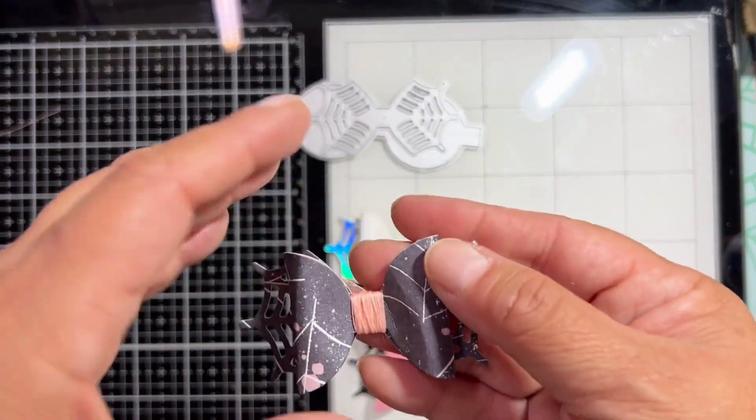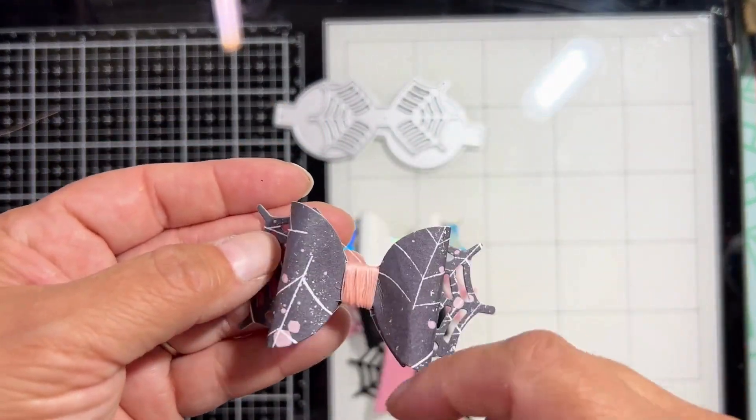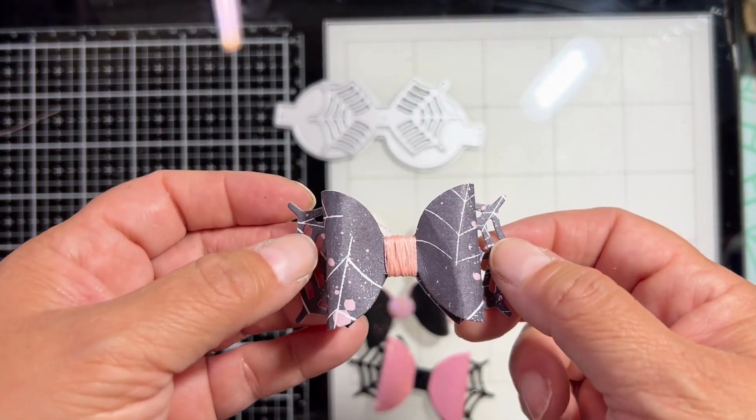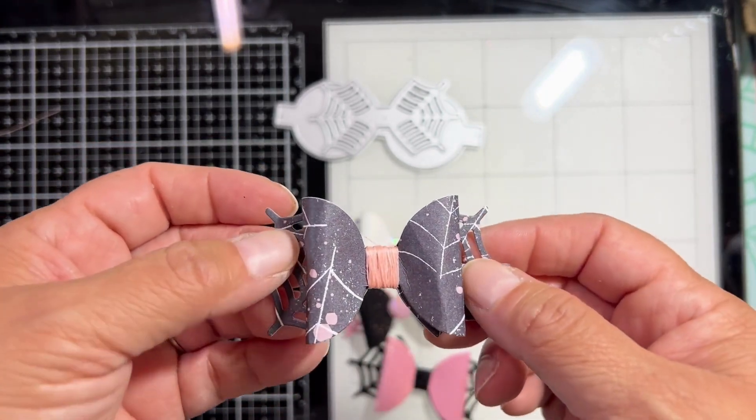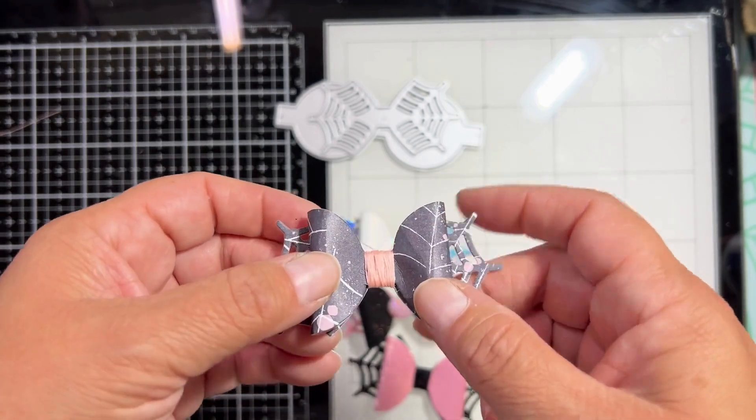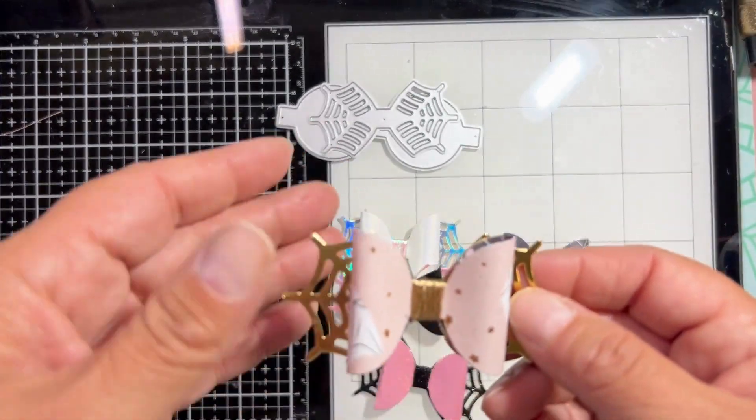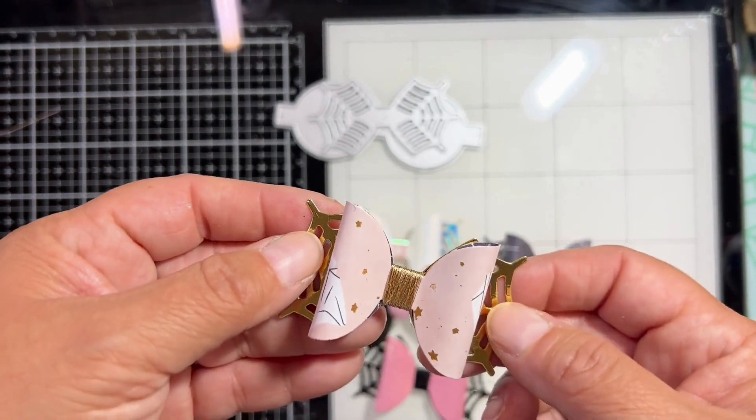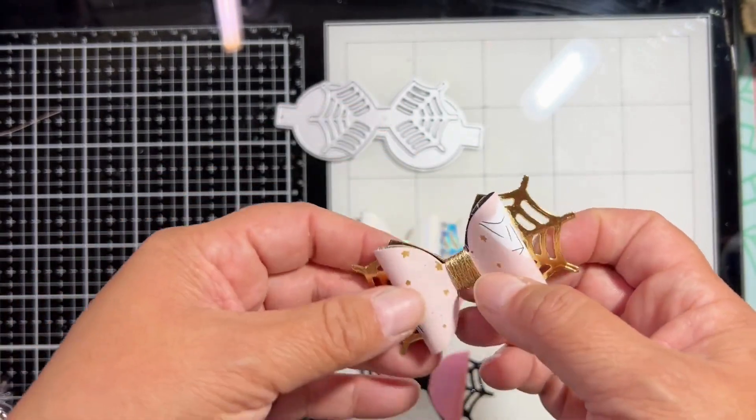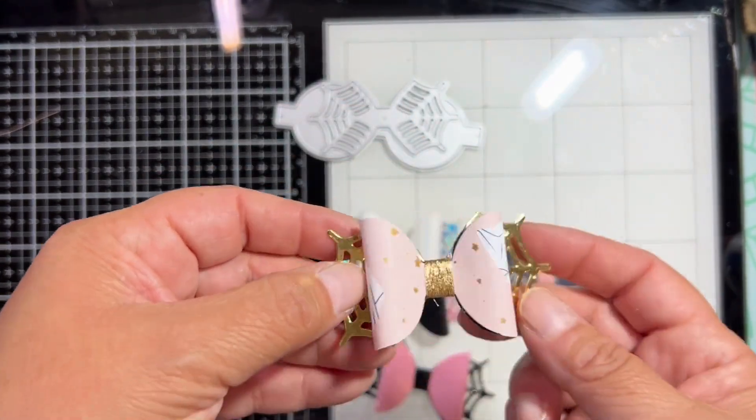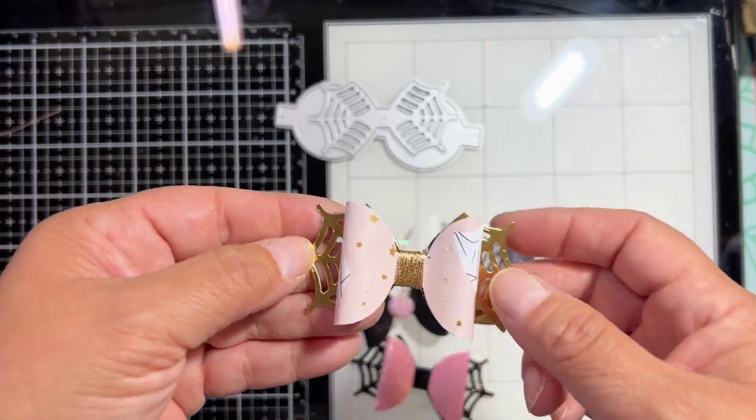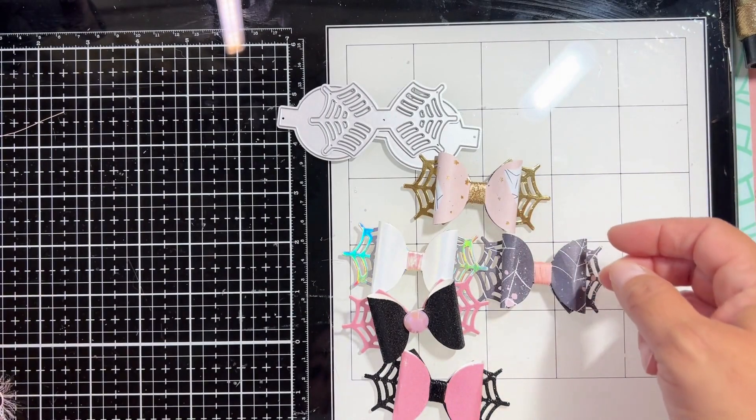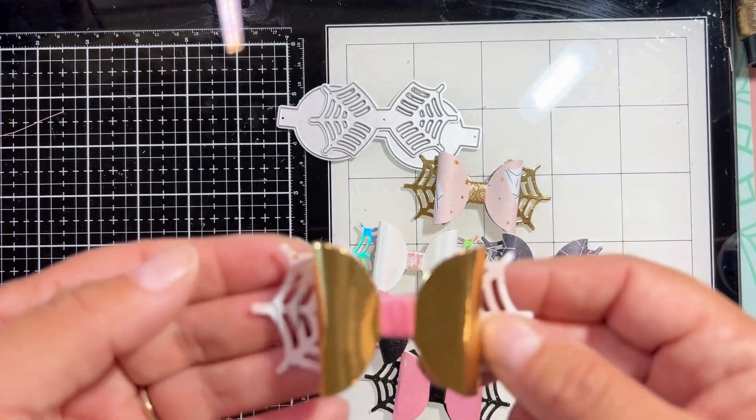And here is another one. This one I went ahead and wrapped it with the glow in the dark thread that I purchased off of Teemo, so that'll be fun once it's in the dark that it's going to glow. Here is another one. This is from the Luna collection and it is the ghosts. They're really cute and then we have the gold spider web in the back.